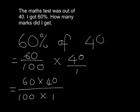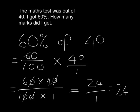But remember what we said when working with fractions: if we can simplify before multiplying out, it's going to make it easier. We can divide the top by 10 and the bottom by 10. 60 divided by 10 is 6, 100 divided by 10 is 10. Then 40 divided by 10 is 4, and 10 divided by 10 is 1. So we get 6 times 4 which is 24 at the top, and 1 times 1 which is 1 at the bottom. 24 over 1 is just 24 — so I got 24 marks out of 40, which is 60%.